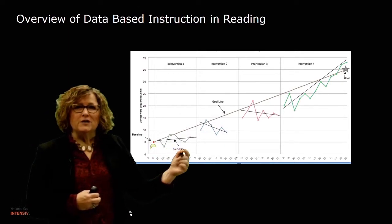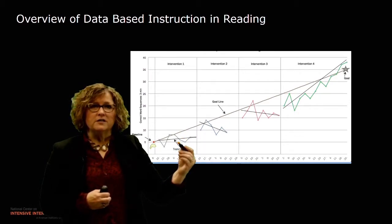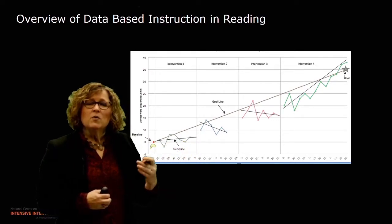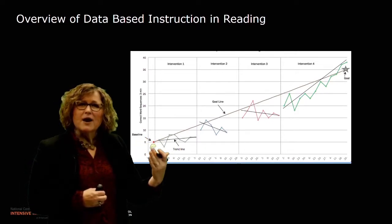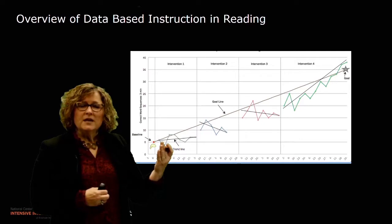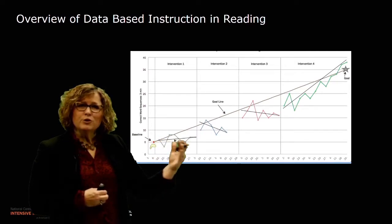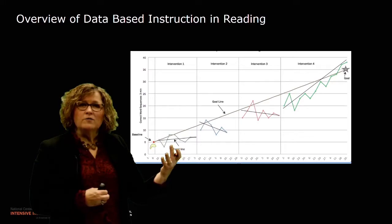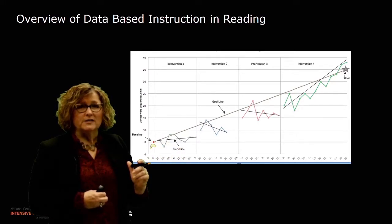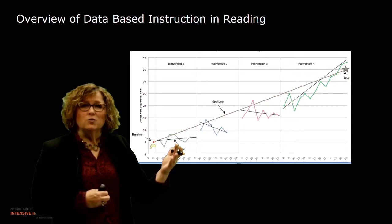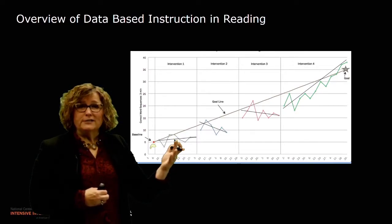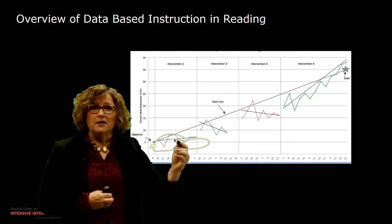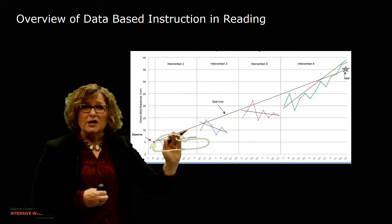In the first intervention, we can see individual data points with some highs and lows. We implement trend lines that capture the essence of what the data in a particular intervention is showing us. The trend of the data in intervention one is actually not on track to meet the goal. We can see here when we look at this trend line that the student is not on track to meet the goal line.